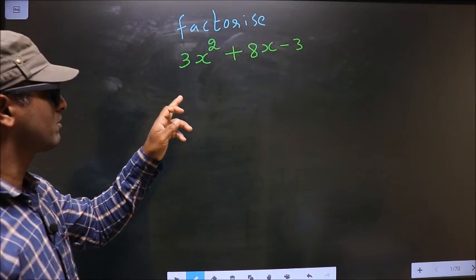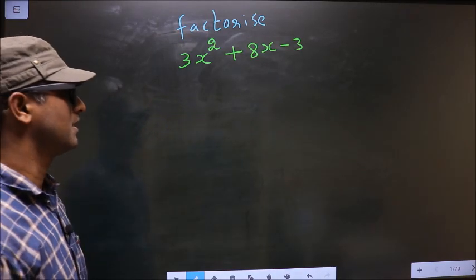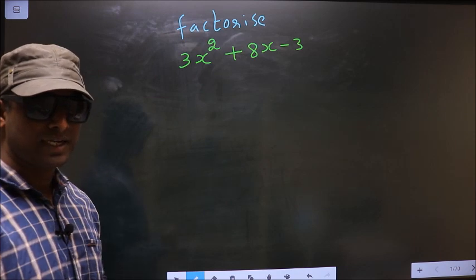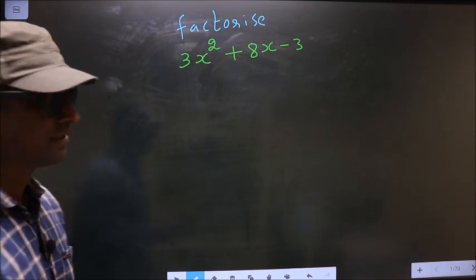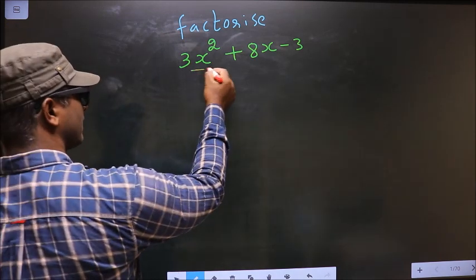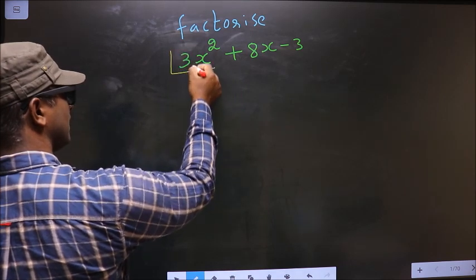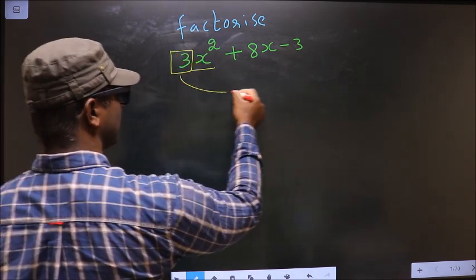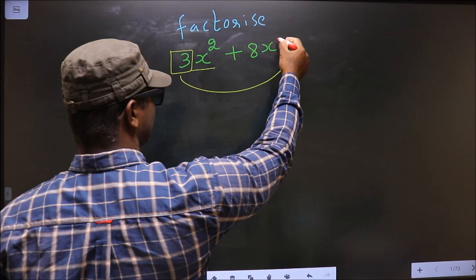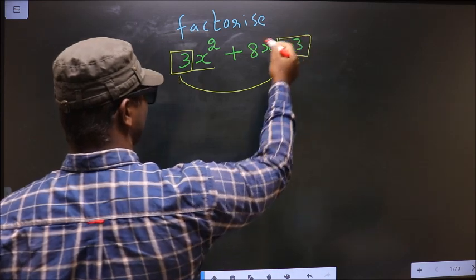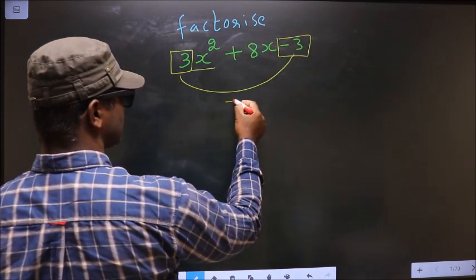Factorize 3x² + 8x - 3. To factorize, step 1: the coefficient of x square, which is 3 here, should be multiplied to the constant, that is minus 3. So 3 into minus 3 is minus 9.